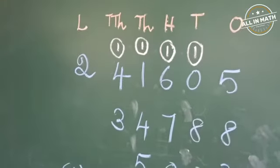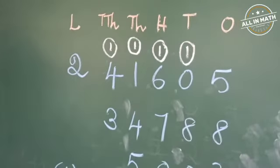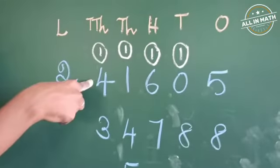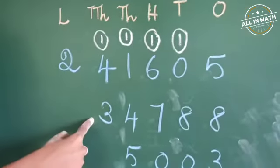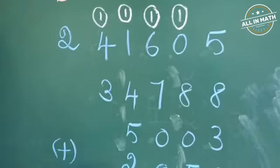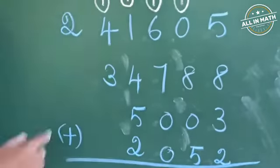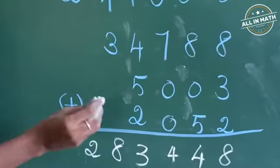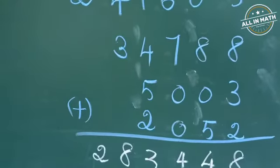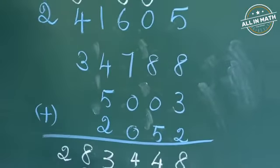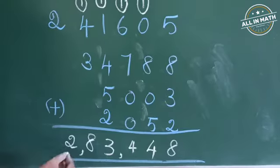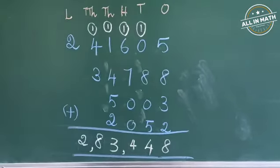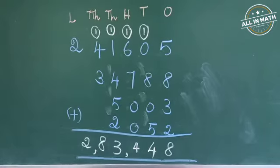Now add the numbers in the 10,000's place: 1, 4, 3. What is 1 plus 4? It's 5. 5 plus 3 is 8. There is no number here to add, so write 2. The total sum of the given numbers is 2,83,448.